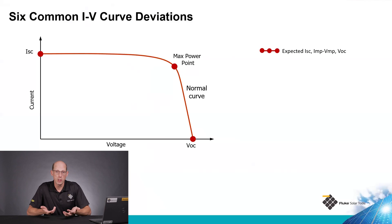Now here we see a normal IV curve. We've got short circuit current on the upper left, open circuit voltage on the bottom right, and we have a nice smooth curve between those two points. That's what we're looking for when we're testing a module or a string of modules. It shows that they're working properly.